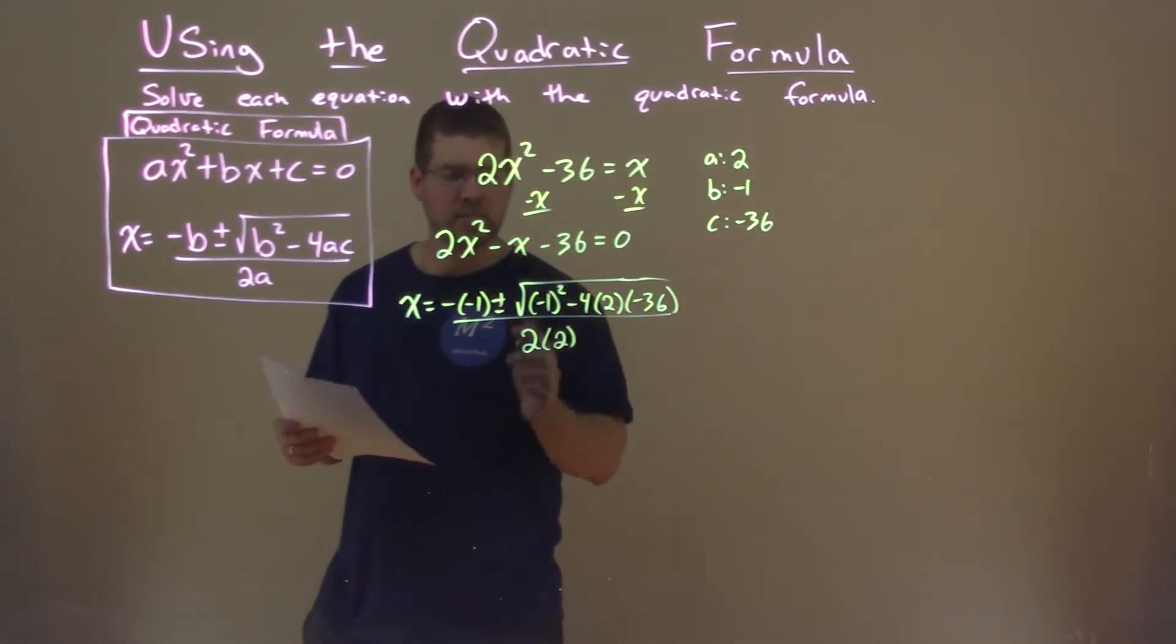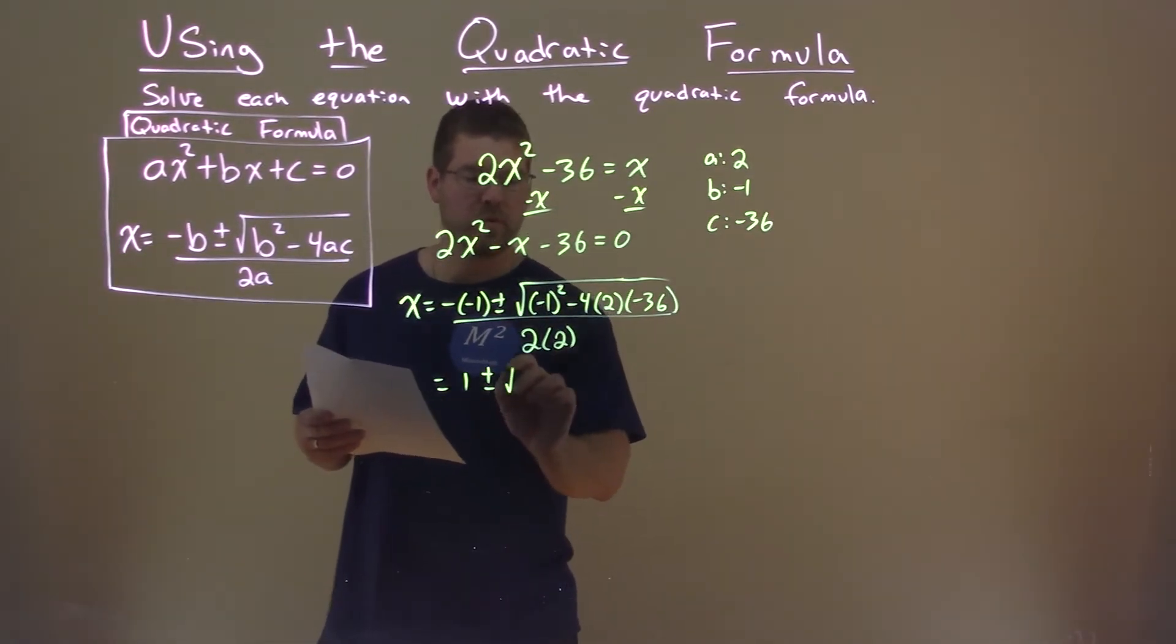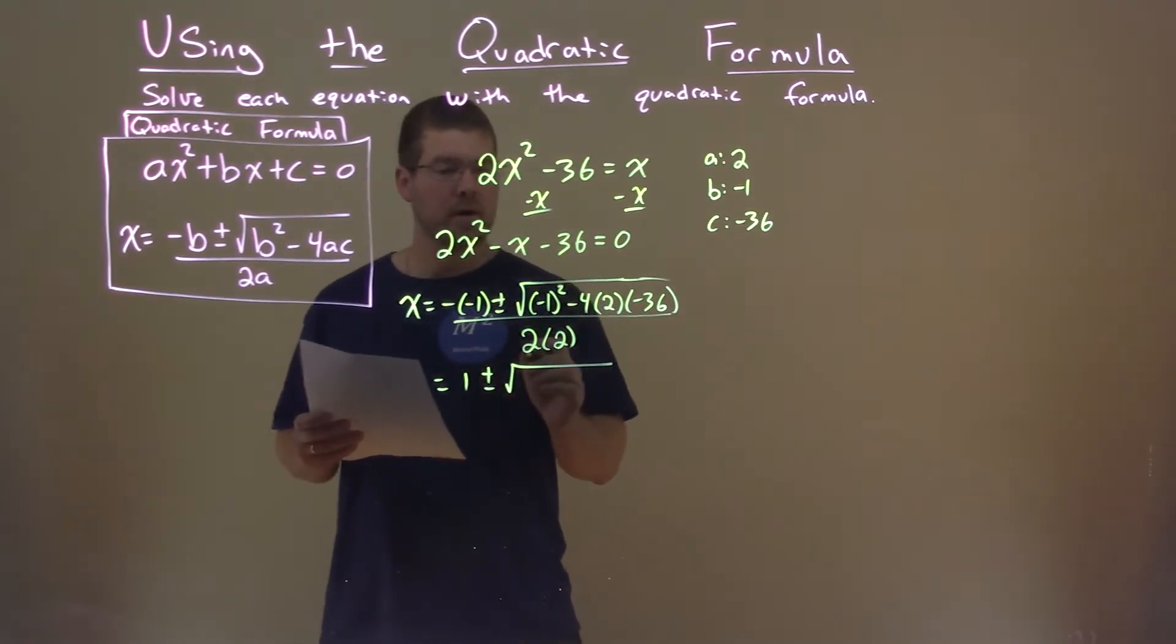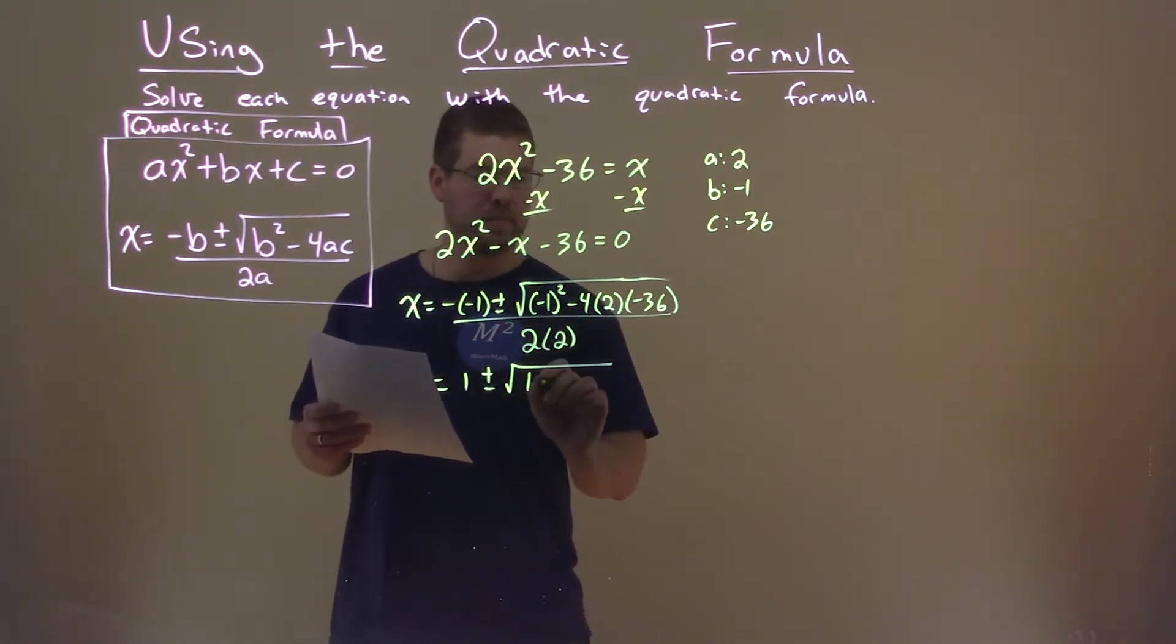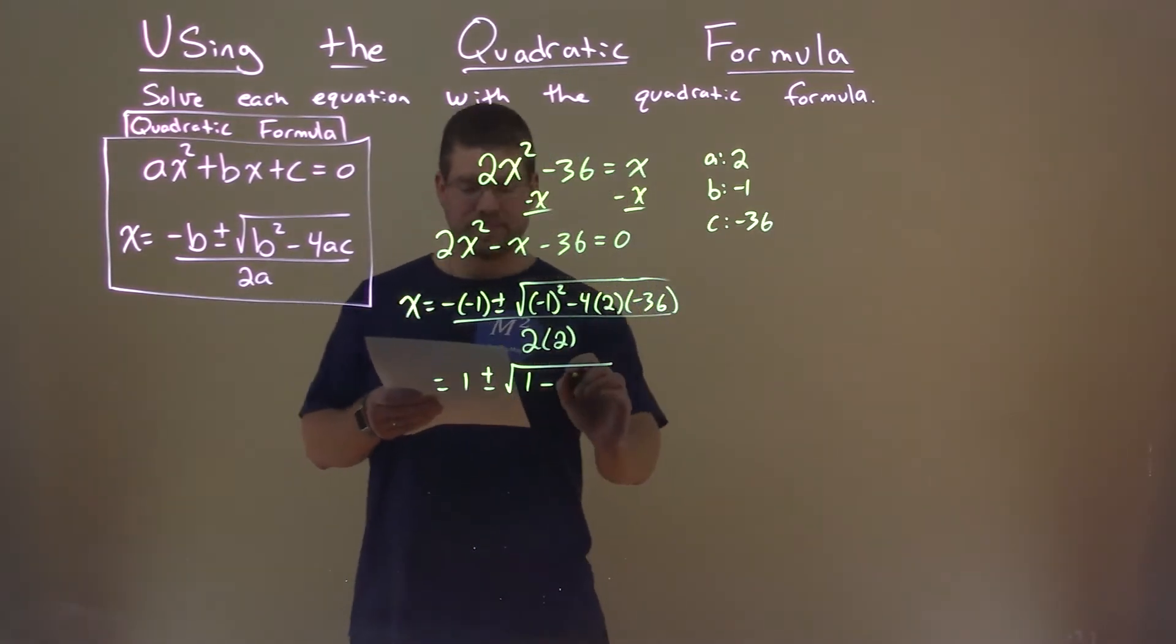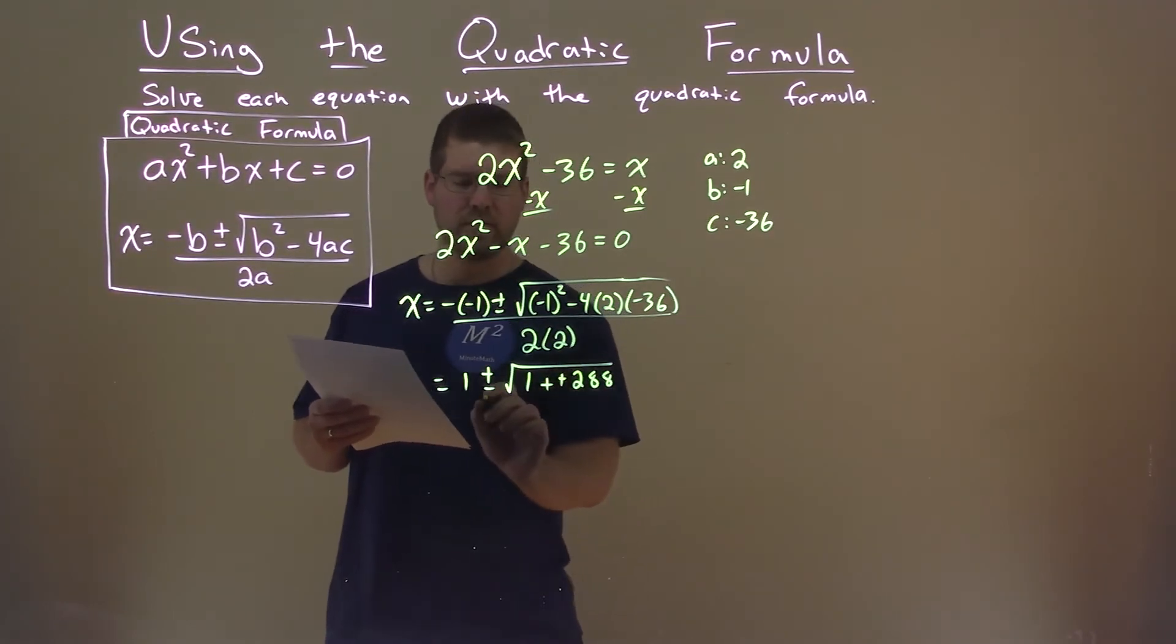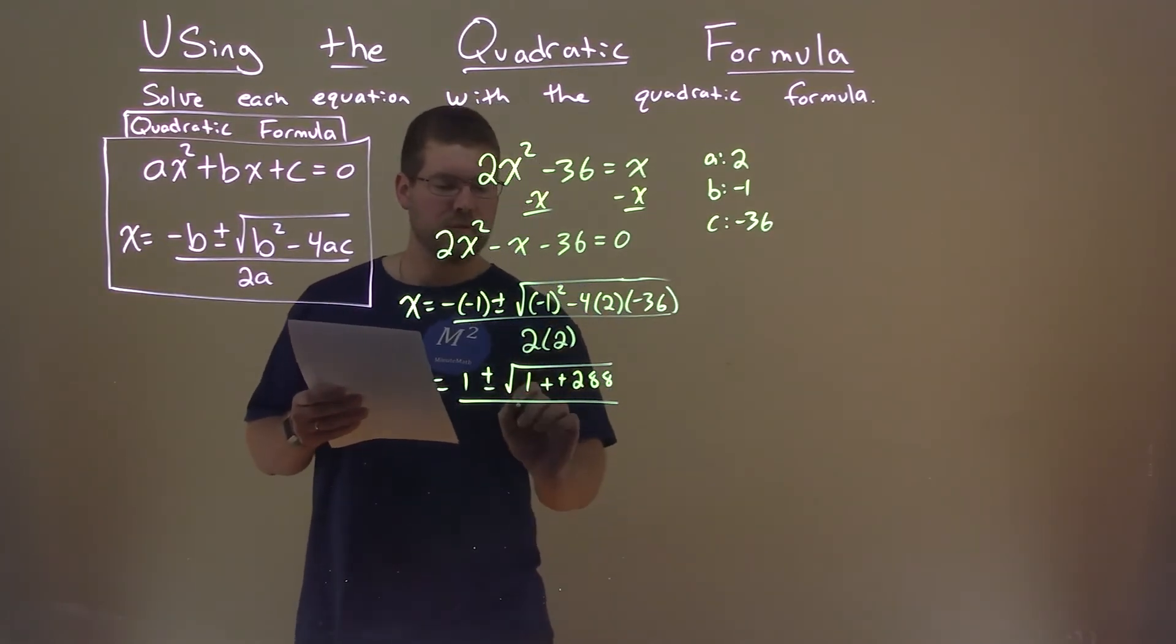So now let's simplify this. Negative negative one is a positive one. Plus or minus the square root, well, negative one squared is a positive one, minus four times two times a negative 36, that's a negative 288. Well, minus a negative is like adding a positive, all over two times two, which is four.